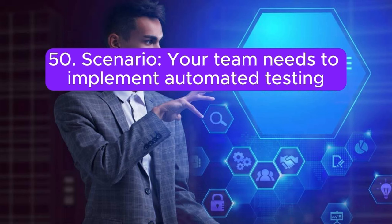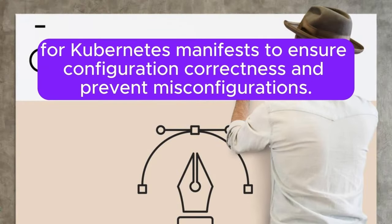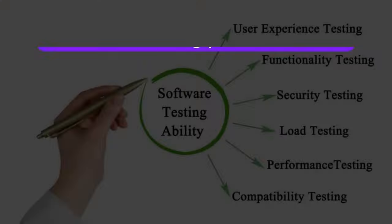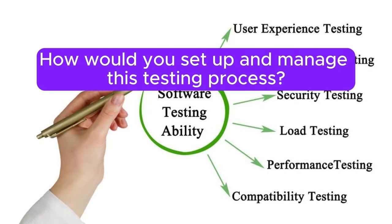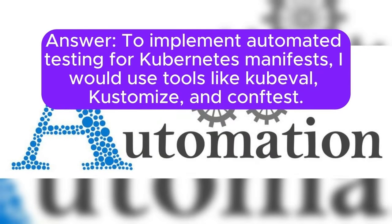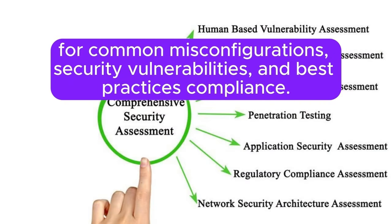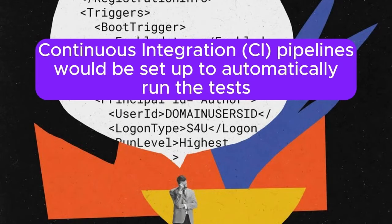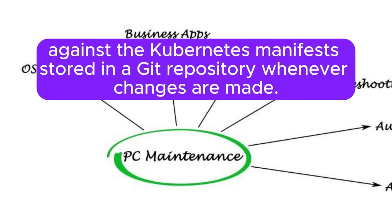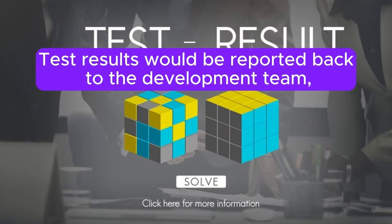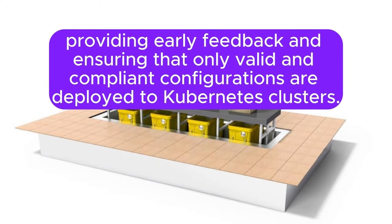Scenario 50: Your team needs to implement automated testing for Kubernetes manifests to ensure configuration correctness and prevent misconfigurations. How would you set up and manage this testing process? Answer: To implement automated testing for Kubernetes manifests, I would use tools like Kubeval, Kustomize, and Conftest. I would define a test suite with validation rules and policies to check for common misconfigurations, security vulnerabilities, and best practices compliance. CI pipelines would be set up to automatically run the tests against the Kubernetes manifests stored in a Git repository whenever changes are made. Test results would be reported back to the development team, providing early feedback and ensuring that only valid and compliant configurations are deployed to Kubernetes clusters.